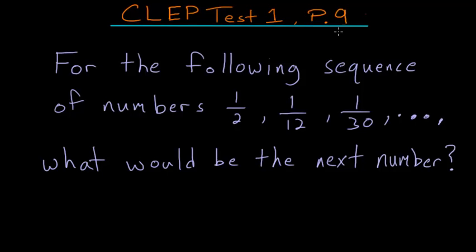For the following sequence of numbers, 1 half, 1 12th, and 1 30th, and so on, what would be the next number?